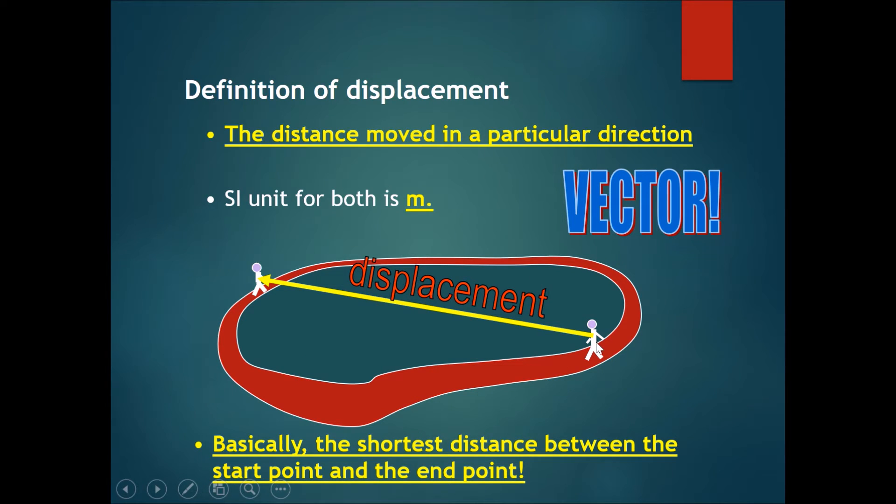is only the shortest distance between the end point and the start point. It doesn't matter in which direction he walked. It only matters the end point and the start point, and the shortest distance between the two is the displacement. There is also a direction to this, whereby the displacement is this magnitude in this direction.